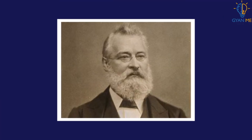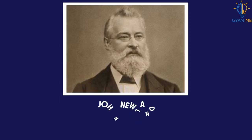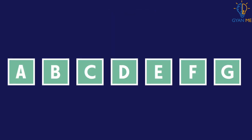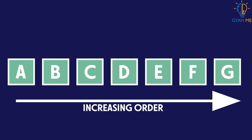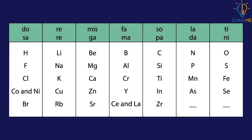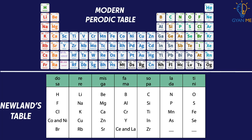The same analogy was present in the attempt of classification done by Newlands. In 1866, John Newlands, an English scientist, arranged the elements in ascending order of increasing atomic mass. He made a table like this. If you compare this to our modern periodic table, we find quite a similarity. He started with hydrogen, which has the lowest atomic mass, and went on to arrange 56 elements known at that time.